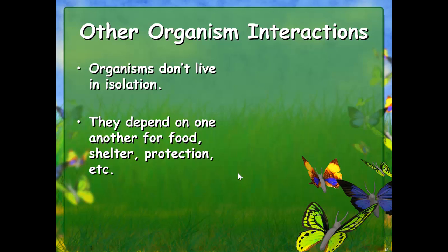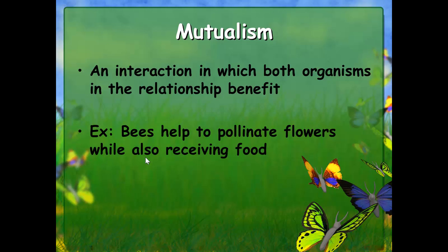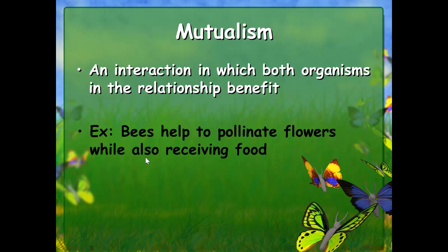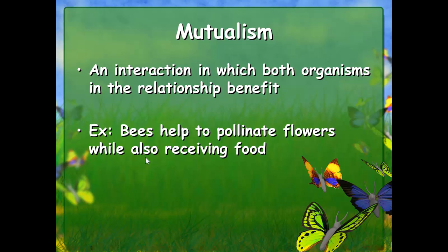Organisms don't live in isolation — they depend on one another for food, shelter, protection, and many other things. Now we're going to describe the three different types of symbiotic relationships. First, mutualism: it's an interaction in which both organisms in the relationship benefit. For example, bees help to pollinate flowers while also receiving food.